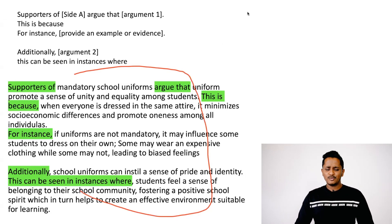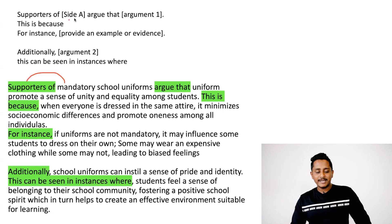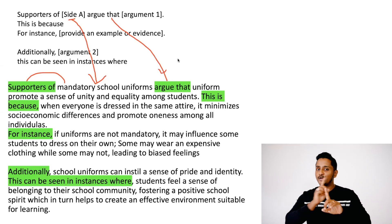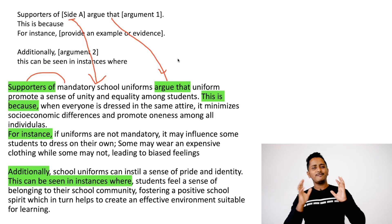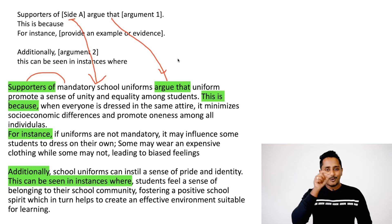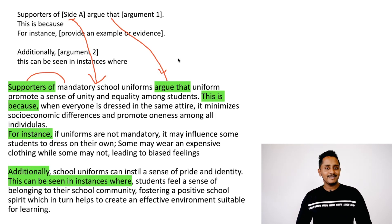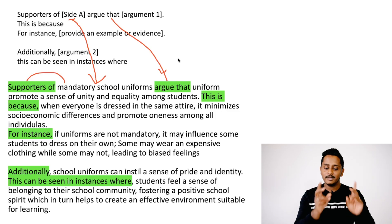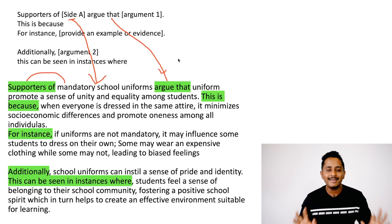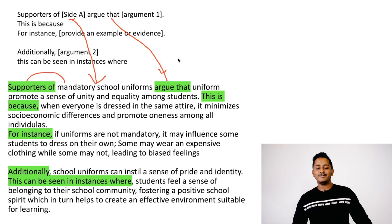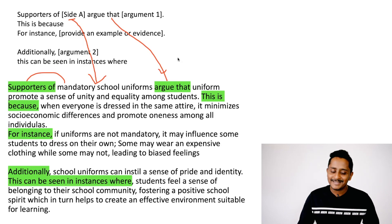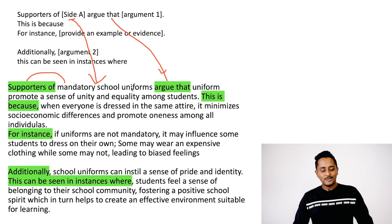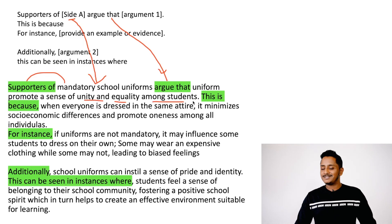'Supporters of mandatory school uniforms argue that...' — write a main idea in a simple, short sentence. Psychologically, when you have an important point to make, always give a short sentence. Supporting ideas are there to explain it with compound or complex sentences. For example: 'Supporters of mandatory school uniforms argue that uniforms promote a sense of unity and equality among students.' That's your main idea.